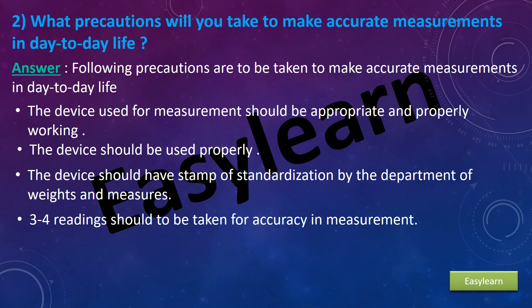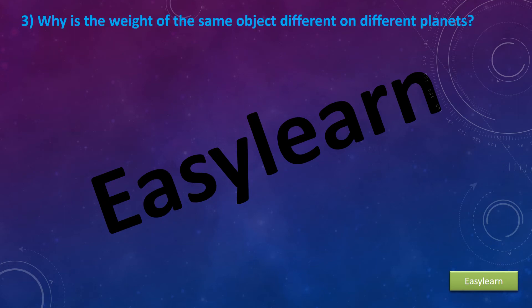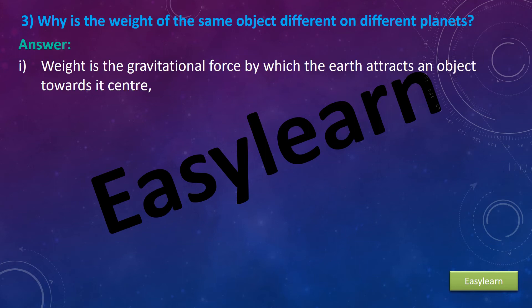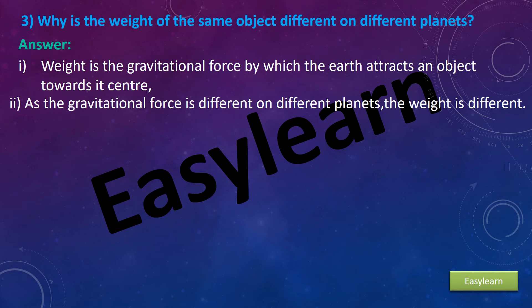Third, why is the weight of the same object different on different planets? Answer: Weight is the gravitational force by which the earth attracts an object towards its center. As the gravitational force is different on different planets, the weight is different.